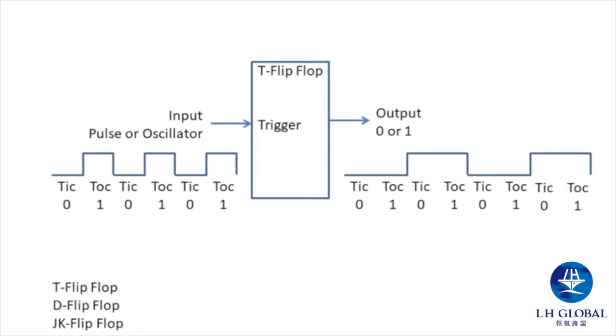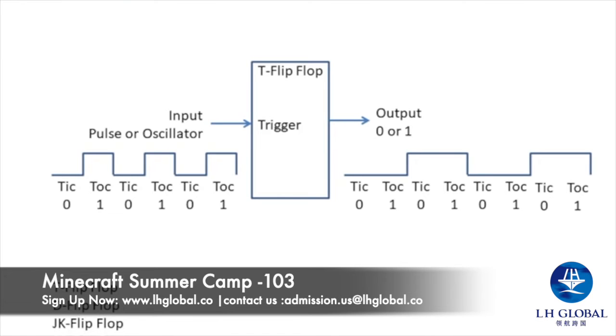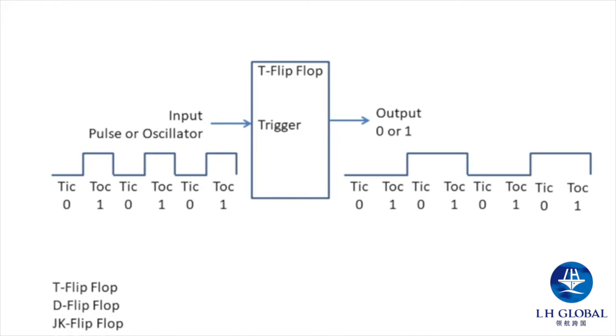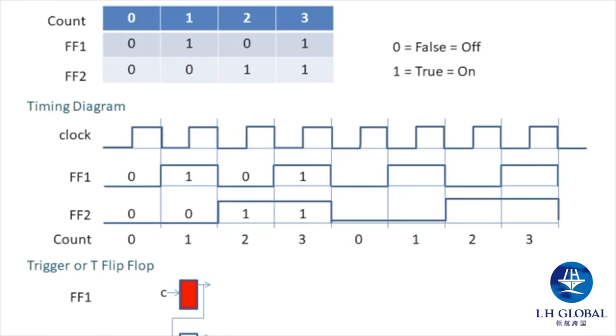So let's look a little bit deeper into how a counter and decoder work. First of all, we start with a flip-flop and an oscillator. The flip-flop converts the oscillator waveform into a waveform that's twice as slow.